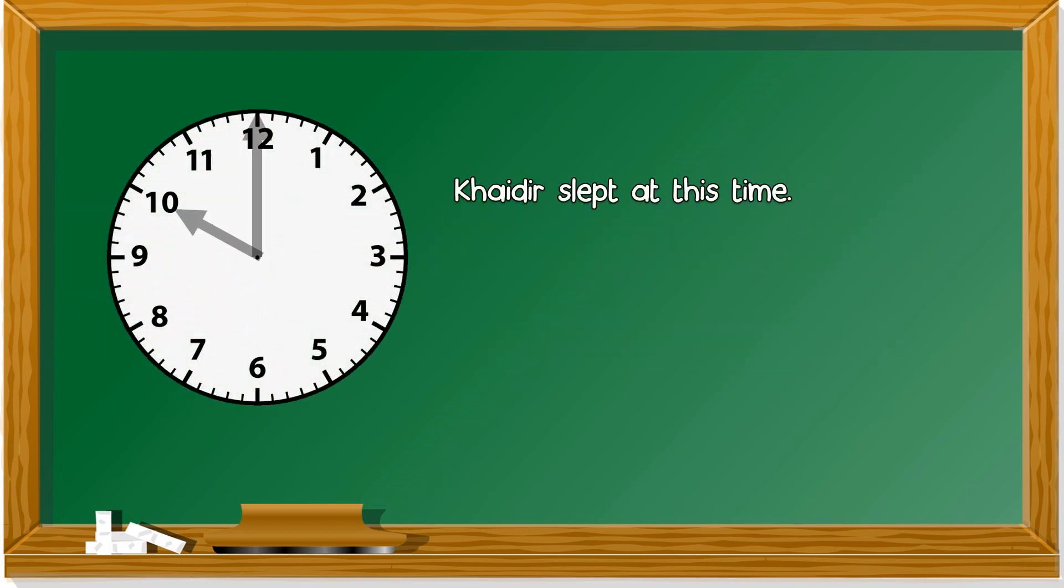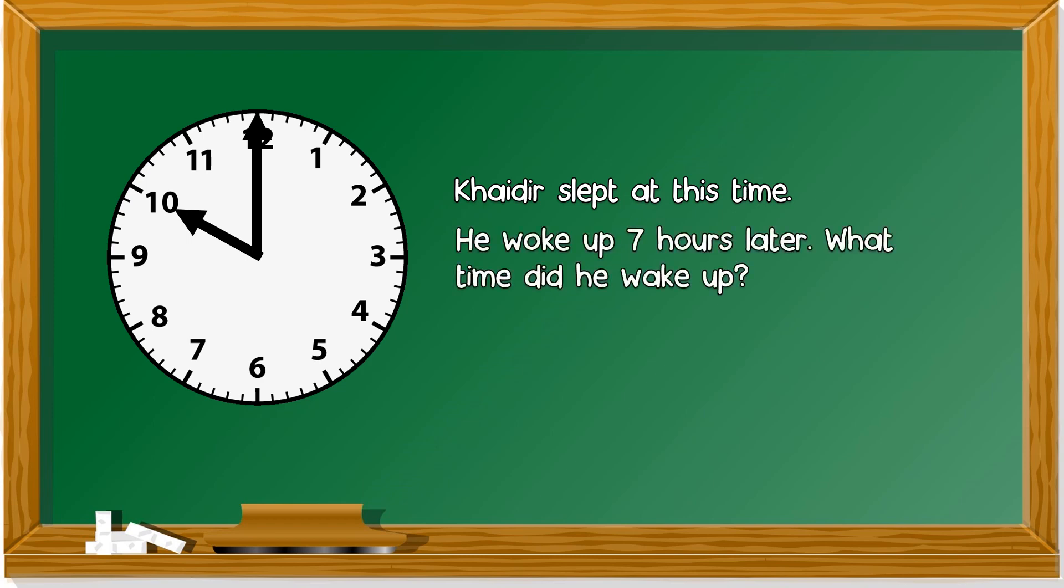Next, Kyder slept at this time. What is this time? The clock shows 10 o'clock at night. We sleep at night. He woke up 7 hours later. From 10 o'clock, you have to add 7 hours. How do you do that?